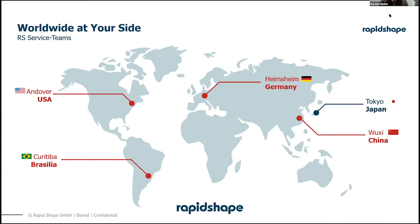We are worldwide because we are an international company. We have a service hub in the USA in Andover, so we are very reachable in the North American market — important for Proto 3000 and Keystone. We also have a service hub in Brazil, Japan, and China, as well as our big service department and Robin in our headquarters in Heimsheim, Germany, supporting product management and service.